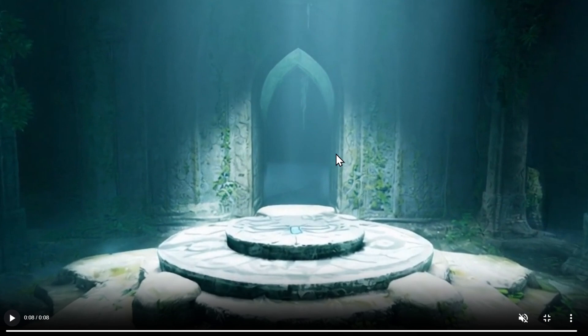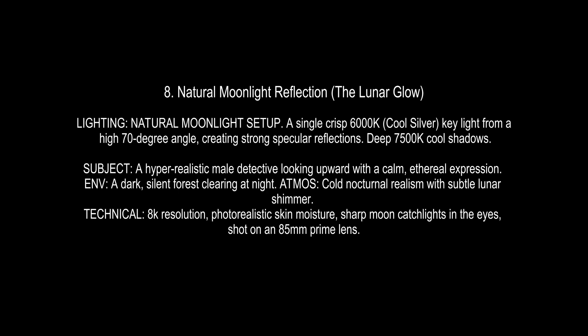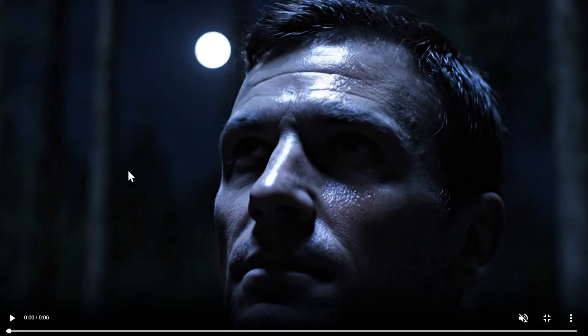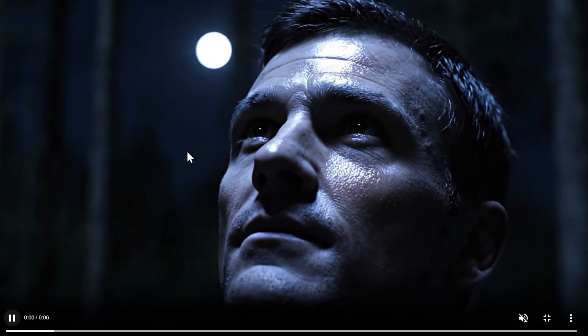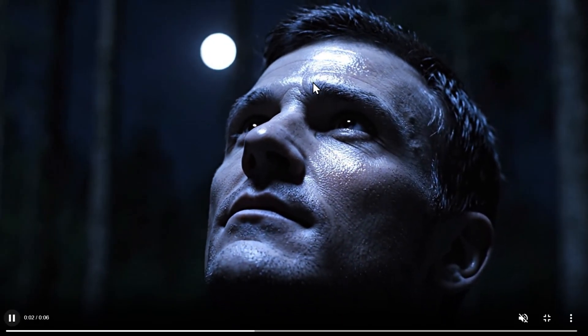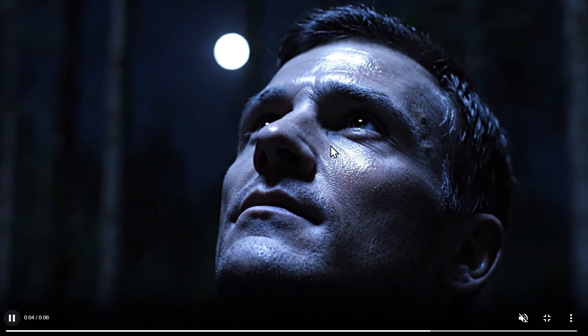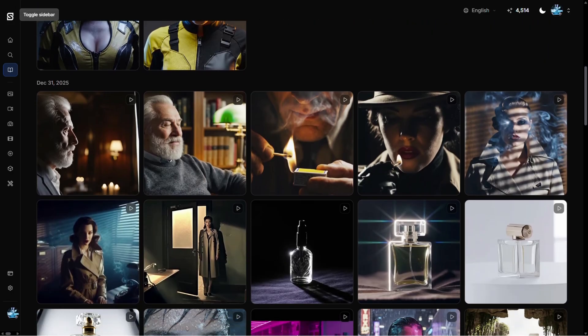We also need the natural moonlight reflection or lunar glow. Always be careful while prompting — don't just say 'moonlight' because this often results in a flat blue image. Use the words 'specular reflection' or 'skin moisture,' which tells the AI to create that shimmer on the face that makes it look more realistic. Here is our character and you can see the reflection of the moonlight on his face with great detail.